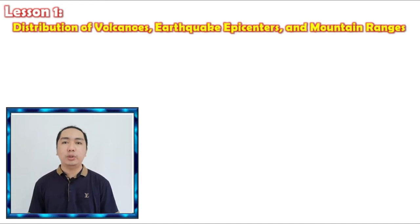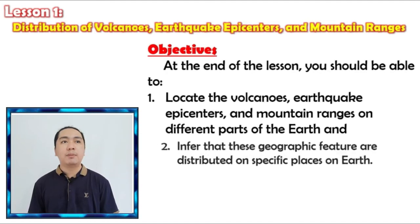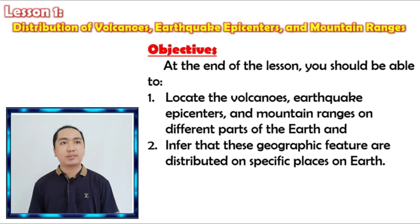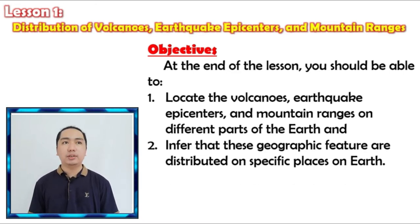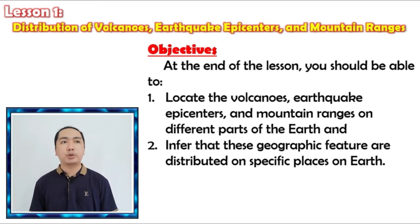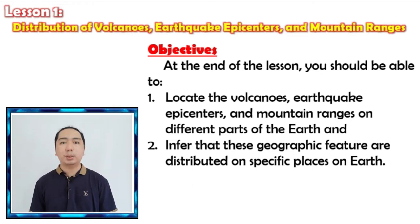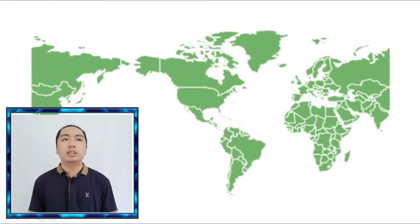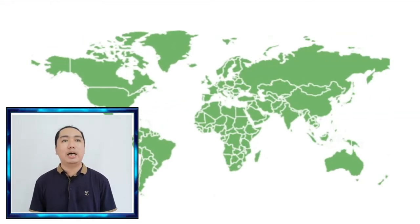In this lesson, we need to have our objectives. At the end of the lesson, you should be able to: 1. Locate the volcanoes, earthquake epicenters, and mountain ranges on the different parts of the Earth. 2. Infer that these geographic features are distributed on a specific place on Earth.